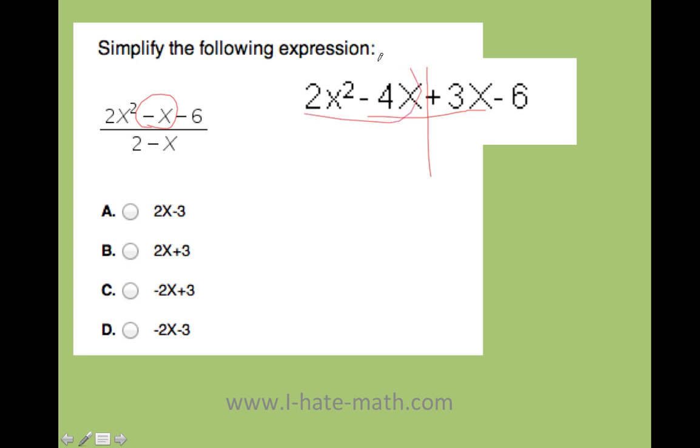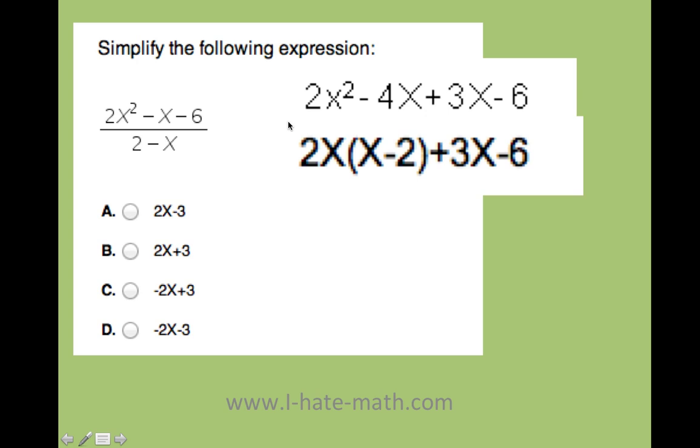Just look at this side. 2x squared minus 4x. Well, what can I factor? What is the greatest common factor of 2x squared minus 4x? Well, it's going to be 2x. So I just rewrite it again: 2x times x minus 2.